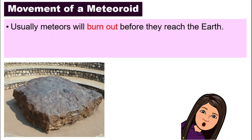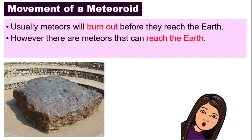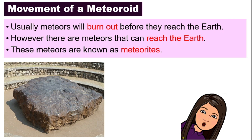But you might still want to be a little bit careful. Because some meteoroids might be slightly bigger, and they actually do not burn up, and they can reach the Earth. When they reach the Earth, they change their name again — they are no longer meteors, but they are meteorites.